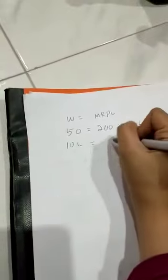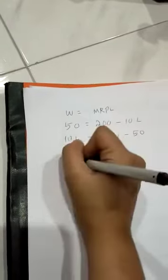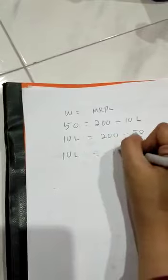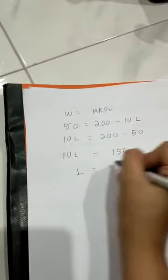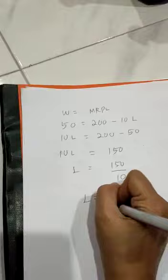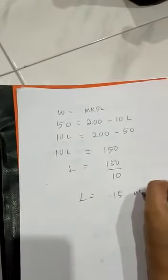Rearranging, 10L equals 200 minus 50. So 10L equals 150. L equals 150 divided by 10, which is 15 units.